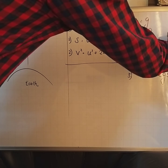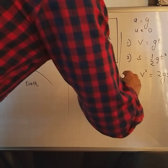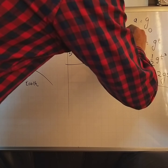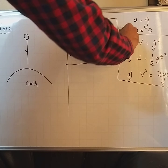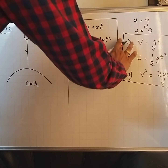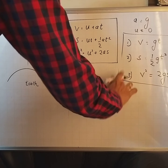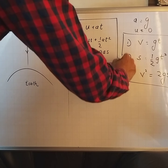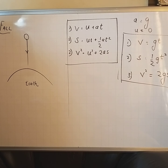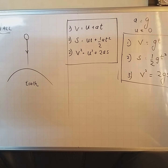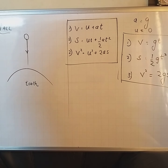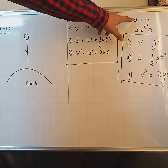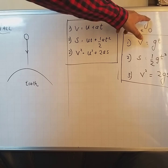Here, the value of s will be taken as the height of the object. So we get these 3 equations which will be used when an object is released from a height, where the value of a will be plus g.